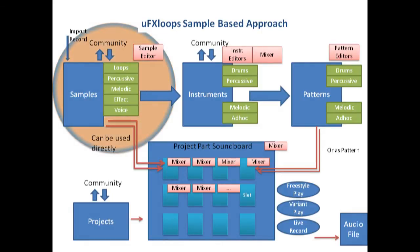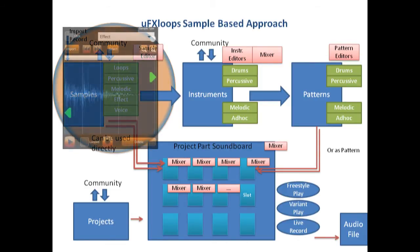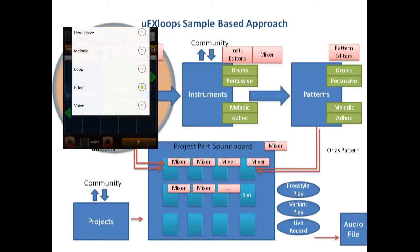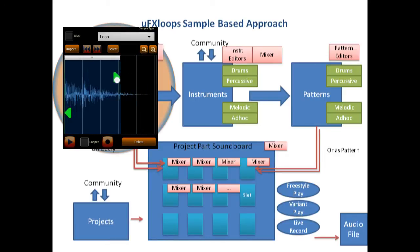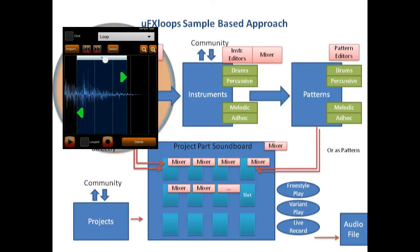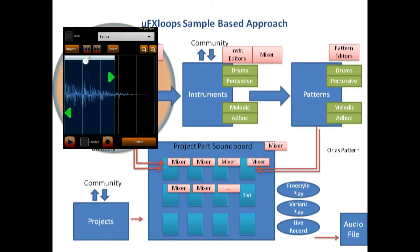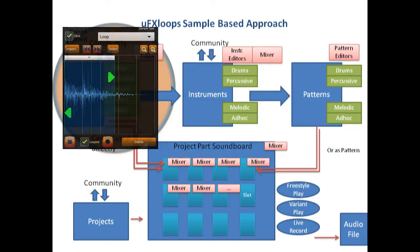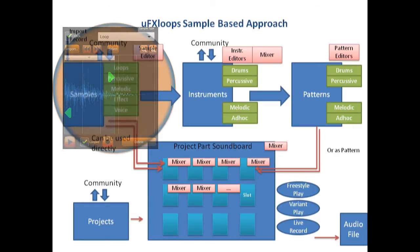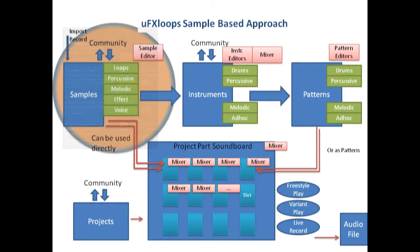Let's start at the very beginning of the production chain. To make a song you need a lot of good sounds, so let's start with the samples. They have different types in UFX Loops so UFX Loops knows what it could do with them later. We have loops, percussive, melodic, effect and voice types. You can either create these samples on your own by importing or recording them, or you just search and download them via the community.